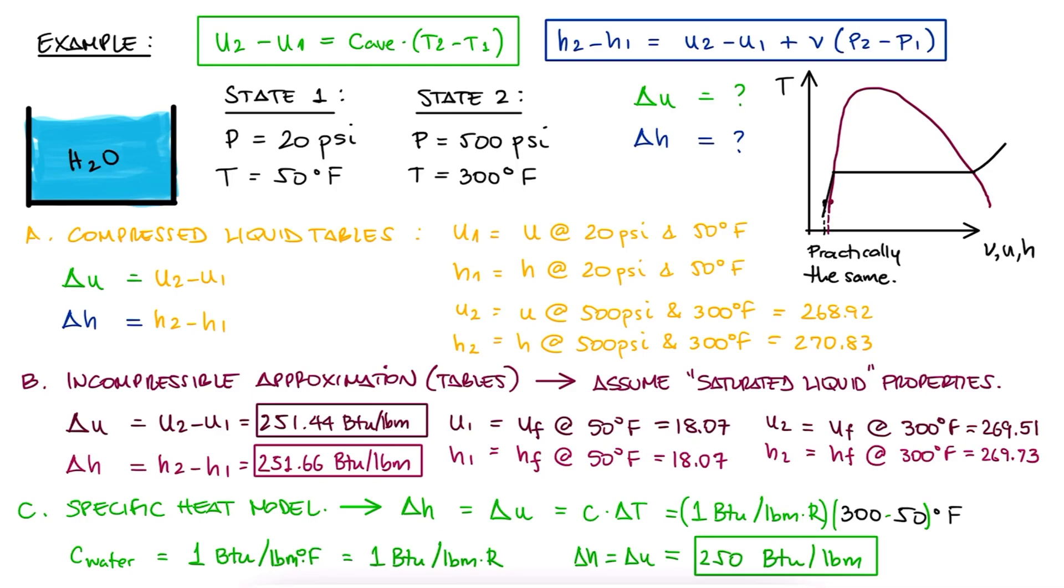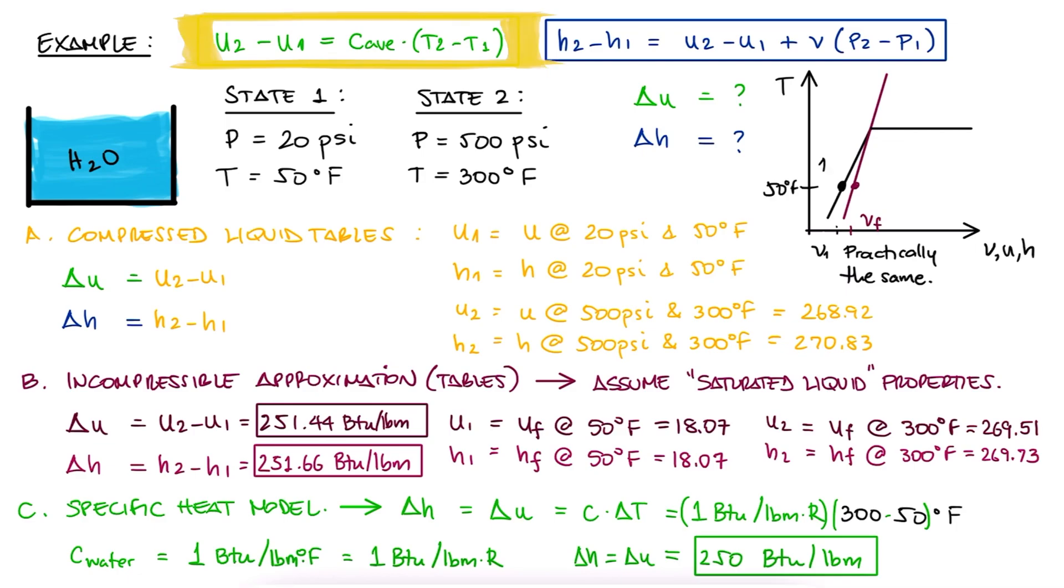However, for such a low pressure as 20 psi for state 1, we don't have a compressed liquid table. In this case, we'll use what we learned today to go from a saturated liquid state to our state 1 values. We learned today that delta U is C delta T and that delta H is delta U plus V delta P.